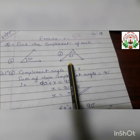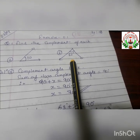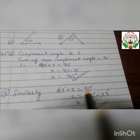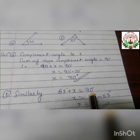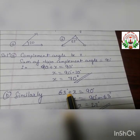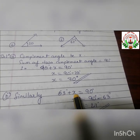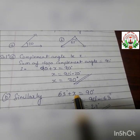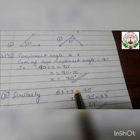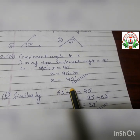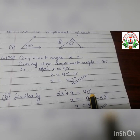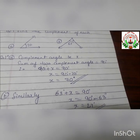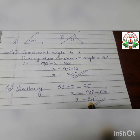In the same way, we solve for part B. So 63 plus X equals 90 degrees, where 63 is the first complementary angle and X is the second. Since the sum of the two complementary angles is 90 degrees, 90 minus 63 gives us 27 degrees.